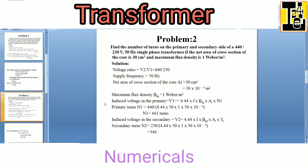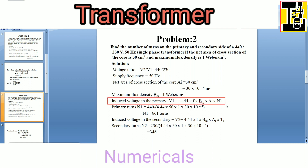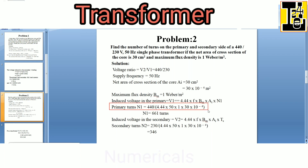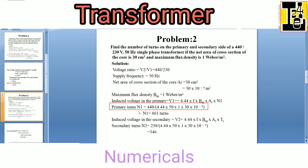Maximum flux density Bm is given as 1 Weber per meter square. The induced voltage in the primary by means of the EMF equation can be written as V1 is equals to 4.44 into f into Bm into AI into N1. So we can calculate the number of primary turns N1 as equals to 440 divided by 4.44 into 50 into 1 into 30 into 10 raised to minus 4. The number of primary turns N1 will be 661 turns.